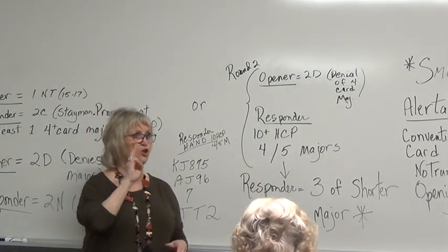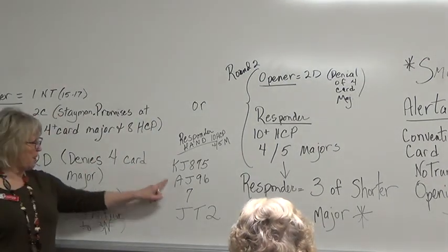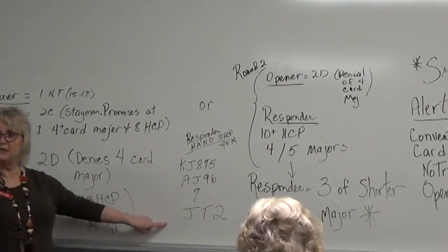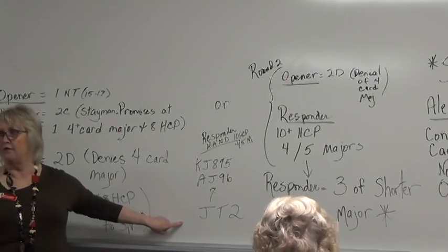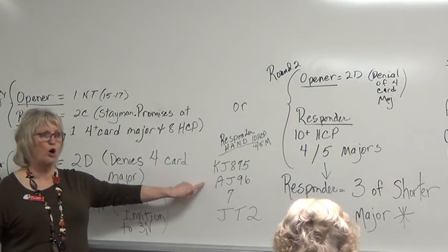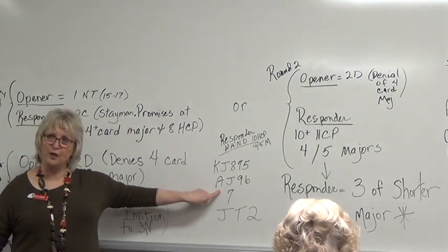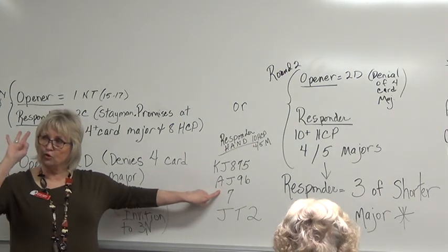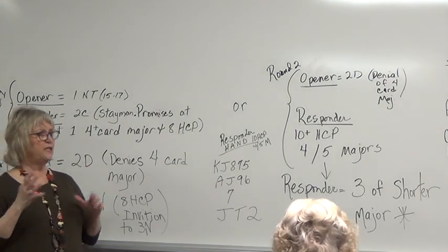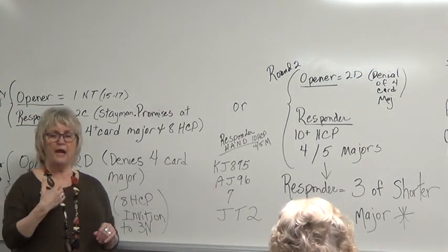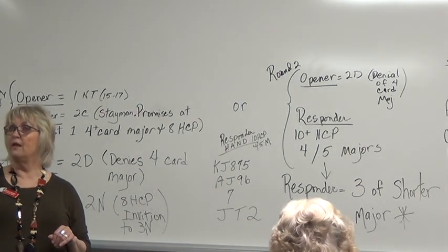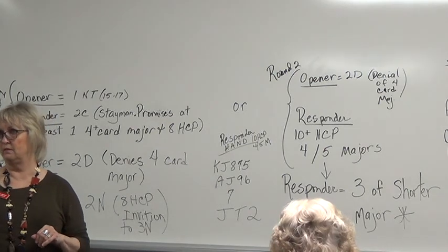Now, stay with me. He'll bid three of the shorter major. Let's say this is your responder. He's heard one no trump, two clubs, two diamonds as his opener. That's just fine, you don't have a four-card major. I happen to have five spades and four hearts. When he bids three hearts, not two, but three hearts, the opener should deduce the fact, oh, he's got five spades. And if the opener has three spades, then he should bid four spades. Are you with me?